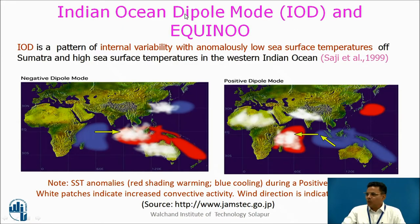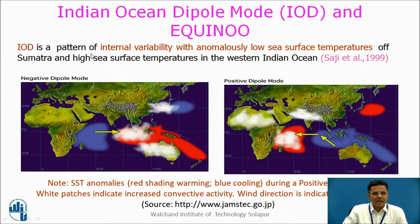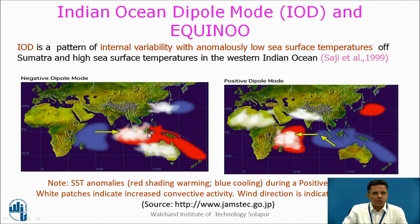The Indian Ocean Dipole Mode also influences Indian summer monsoon rainfall. IOD is a pattern of internal variability with anomalously low sea surface temperatures off Sumatra and high sea surface temperatures in the western Indian Ocean. Here we observe low temperatures and high pressures; in the red color region, we observe high temperatures and low pressures. There are two modes: a negative dipole mode and a positive dipole mode, which is exactly opposite. This fluctuation also has an effect on Indian summer monsoon rainfall.